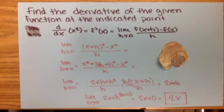The x squareds will cancel out, which gives you 2xh plus h squared over h. You can factor out an h, which will leave you with 2x plus h.